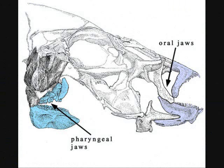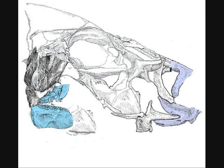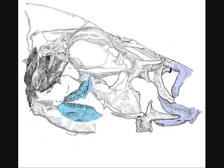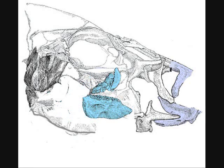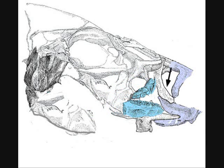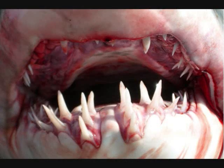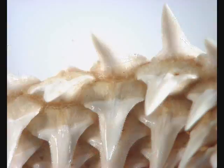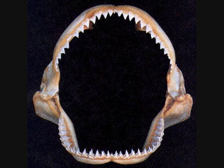Which evolved first — the jaws or the teeth? The paper states that tooth evolution is believed to have occurred by one of two mechanisms. One: teeth evolved independently from jaws, from pharyngeal denticles similar to those in extant fish like the zebrafish — scientists think teeth may have evolved in the pharynx of early jawless fish and migrated forward. Or two: teeth evolved at the same time as or after jaws, by internalization of skin denticles similar to those in modern-day sharks. So teeth evolved before, during, or after jaws.